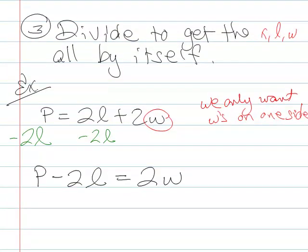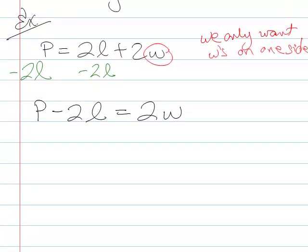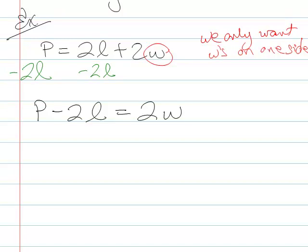So I'm skipping the middle step because I don't need it. And I told you what it is anyway because it's a secret. So we're going to divide by whatever we need to do to get that letter all by itself. So I've got this 2w. Best way to get rid of the 2 is to divide by 2. So I've got w equals p minus 2l over 2.